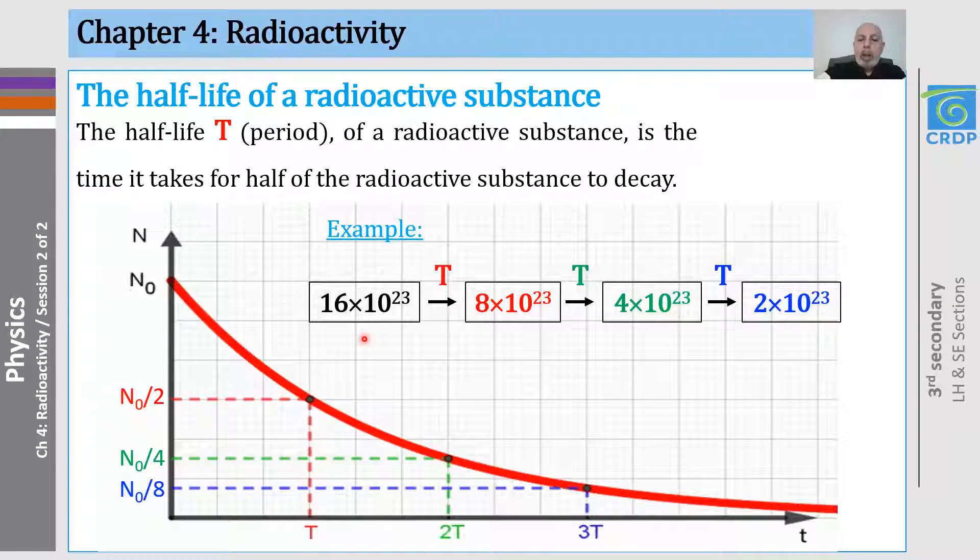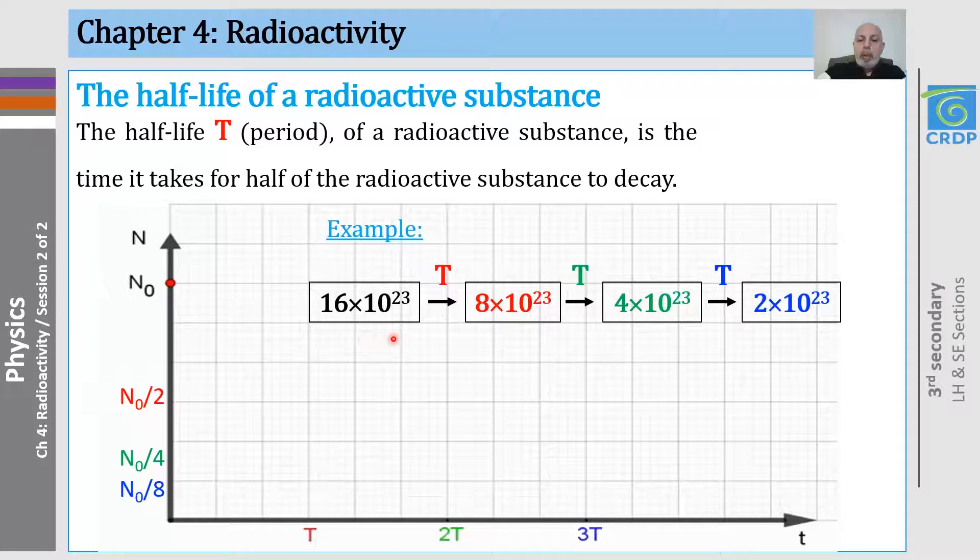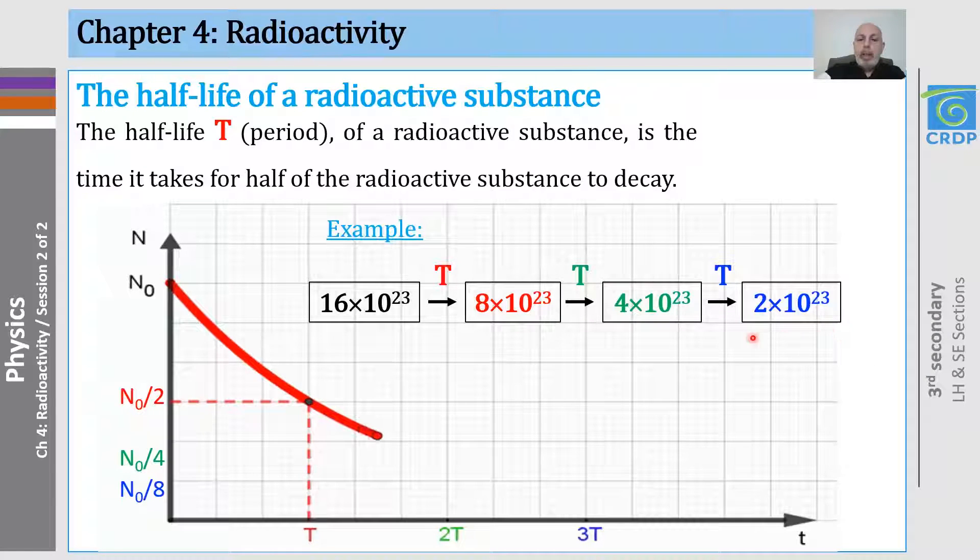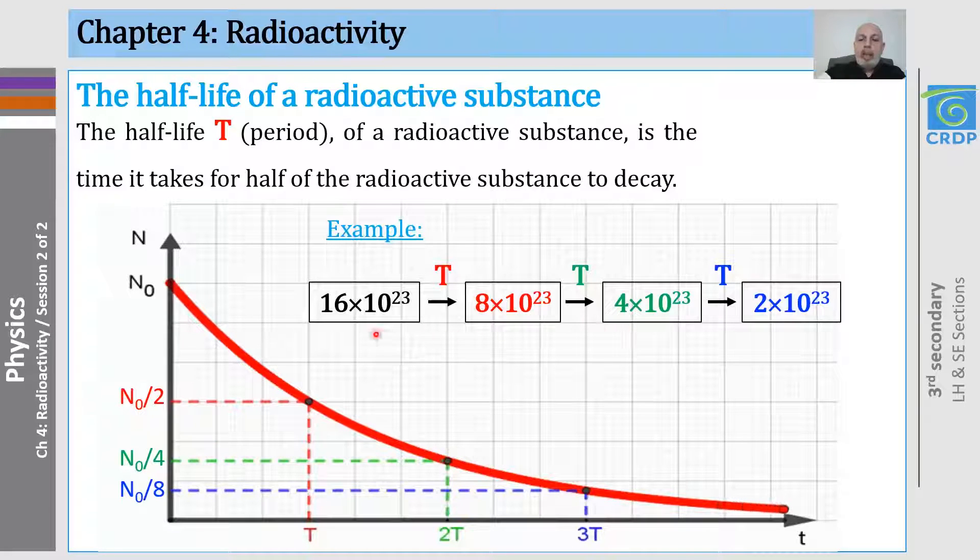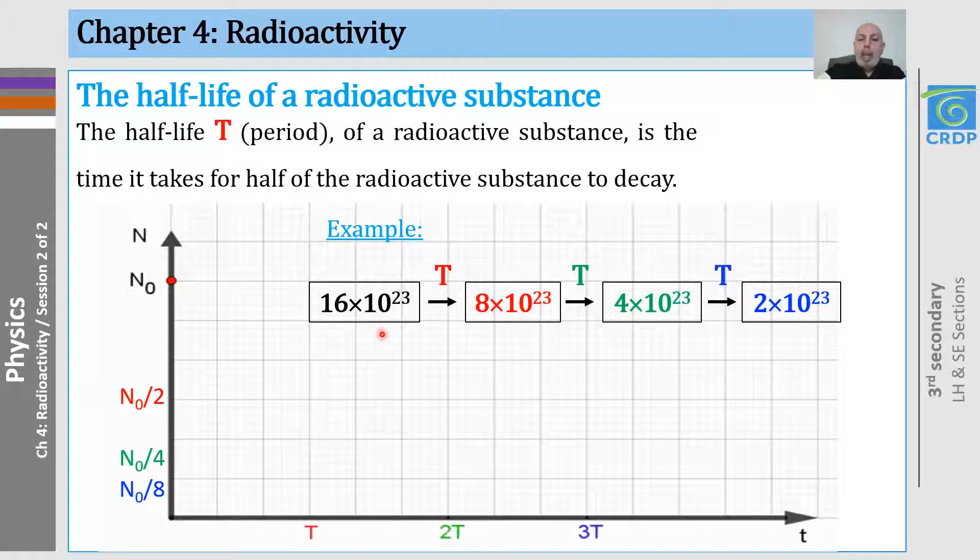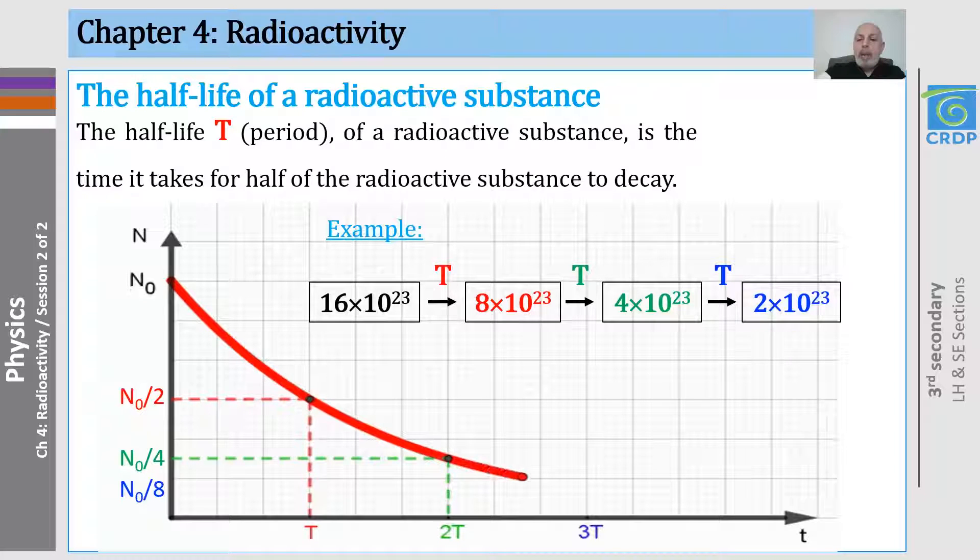Just one remark before we continue. These numbers that you see here are the numbers of the remaining radioactive nuclei. So, for example, after one, two, three periods, the remaining number of radioactive nuclei is 2 times 10 to the 23.